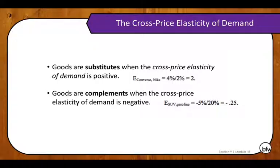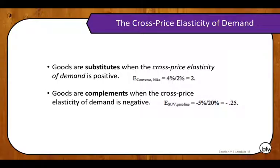So when measuring cross-price elasticity of demand, we care whether the value is positive or negative. A positive number tells us the goods are substitutes; a negative value tells us they are complements. If the cross-price elasticity is zero, it tells us that good A and B are not related — not substitutes, not complements, completely independent. For example, if the price of breakfast cereal increased, there would likely be no impact on the quantity of denim jeans demanded, because they are unrelated goods.